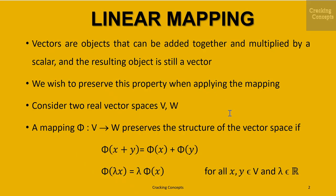As we all know, vectors are objects that can be added together and multiplied by a scalar, and the resulting object is still a vector. We wish to preserve this property when applying the mapping. Consider two real vector spaces V and W; the mapping phi from V to W preserves the structure of the vector space if phi of x plus y can be written as phi of x plus phi of y, and phi of lambda x can be written as lambda times phi of x, where x and y are vectors of V and lambda is a real number.